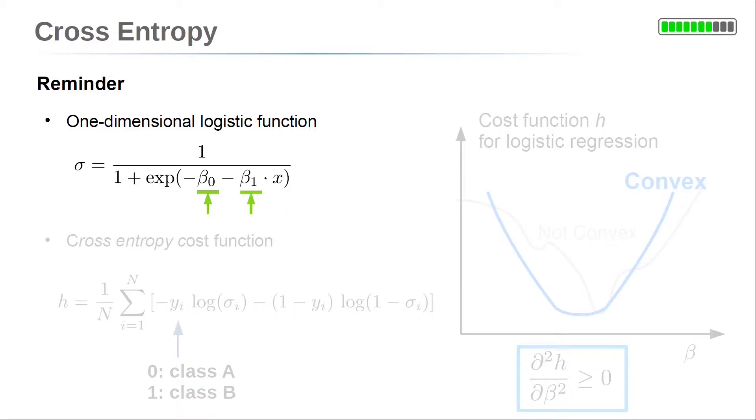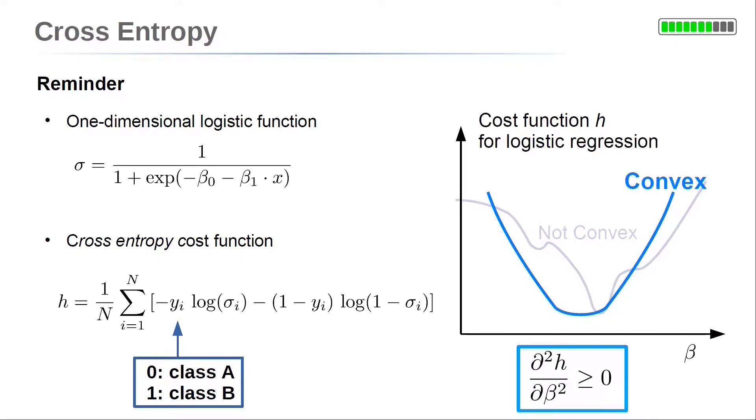The function is fitted to data by adjusting the parameters beta0 and beta1. Therefore, cross-entropy was introduced as cost function. Here, the equation takes the two classes into account. The i-th data point has a target value yi which can be either 0 or 1 depending on the class it represents. Further, we proved that this cost function is convex for logistic regression. So it seems a useful cost function. But what does it mean?